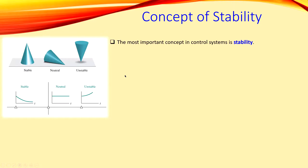The most important concept in control systems is actually stability. If your system is not stable you can do whatever you want with all the other parameters like noise or distortion, but it is not useful if your stability is not solved. So stability is the most important concept.